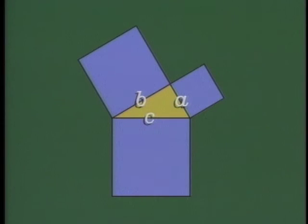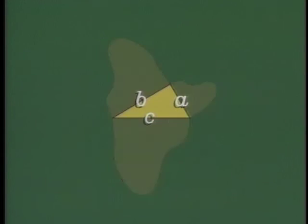This leads to an interesting generalization. For any three similar shapes on the sides of a right triangle, the sum of the areas of the two smaller equals the area of the larger.